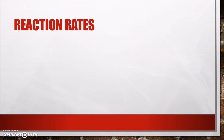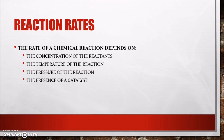All chemical reactions occur at specific rates. The rate of a chemical reaction depends on several physical and chemical factors. These factors are the concentration of the reactants, the temperature of the reaction, the pressure of the reaction, and the presence of a catalyst, which is a substance that increases the rate of a chemical reaction without itself undergoing any permanent chemical change.